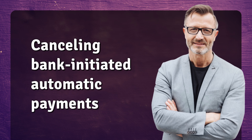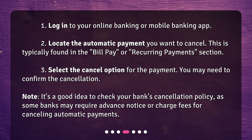Canceling bank-initiated automatic payments. First, log in to your online banking or mobile banking app. Second, locate the automatic payment you want to cancel — this is typically found in the Bill Pay or Recurring Payments section. Third, select the cancel option for the payment; you may need to confirm the cancellation. Note: it's a good idea to check your bank's cancellation policy, as some banks may require advance notice or charge fees for cancelling automatic payments.